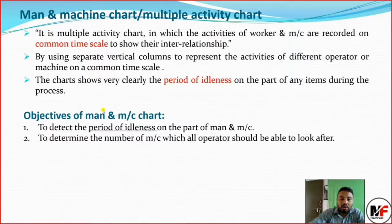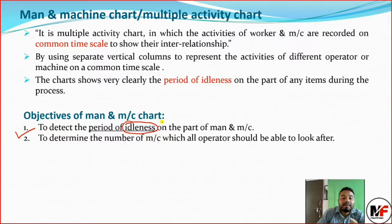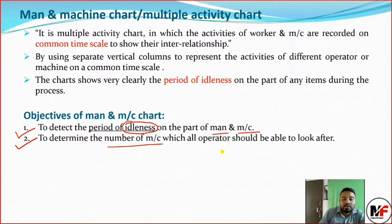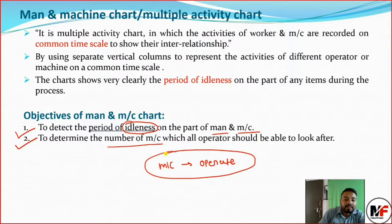The main objectives of the man and machine chart are: first, to detect the period of idleness — to detect when the worker has idleness and when the machine has idleness. Second, to determine the number of machines which one operator should be able to look after. For example, if a drilling machine can be operated, the chart helps identify any independent or combined activities.